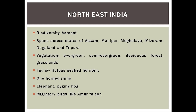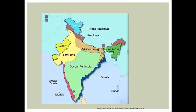This biogeographic zone spans across the northeastern states of Assam, Manipur, Meghalaya, Nagaland, and Tripura. This zone is a transition between the Indian, Indo-Malayan, and Indo-Chinese regions. The Khasi and Jaintia Hills, present in Meghalaya, have one of the richest biodiversities in Asia.